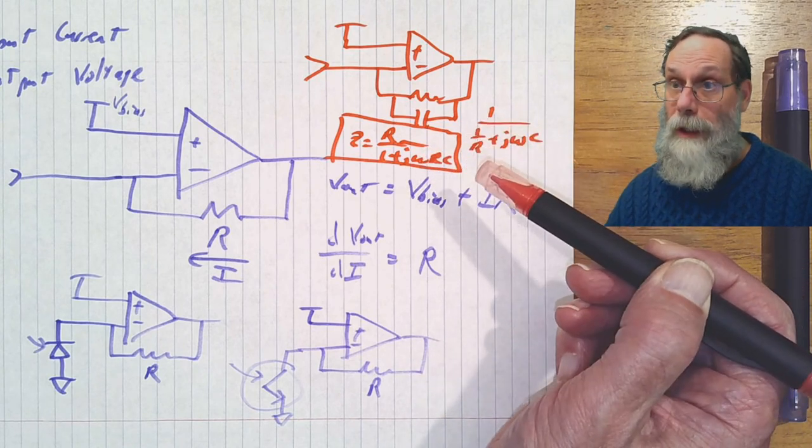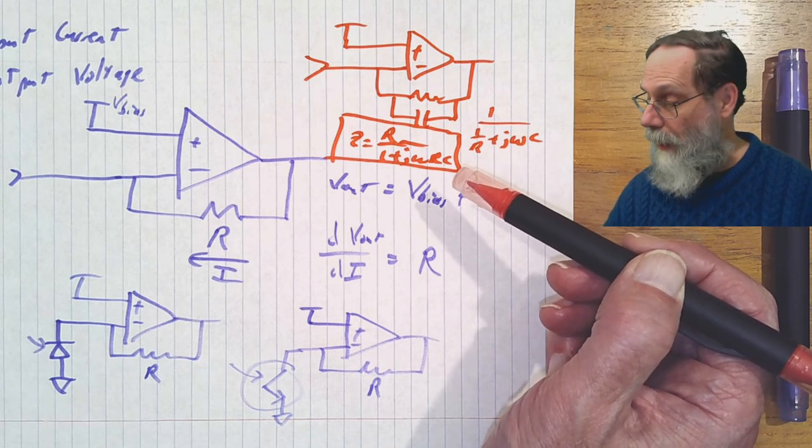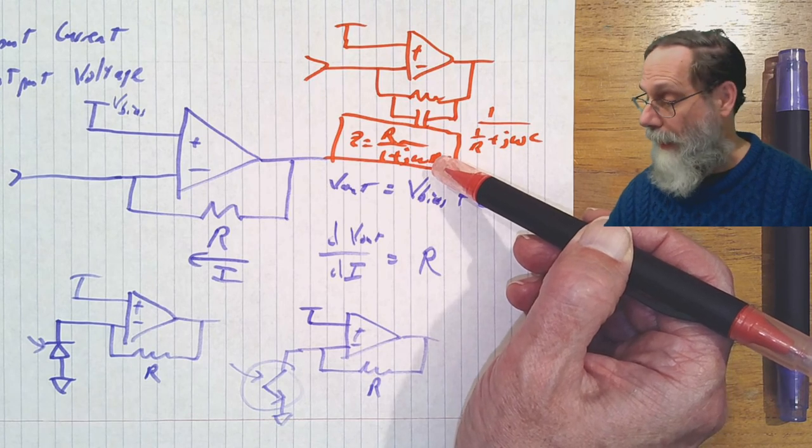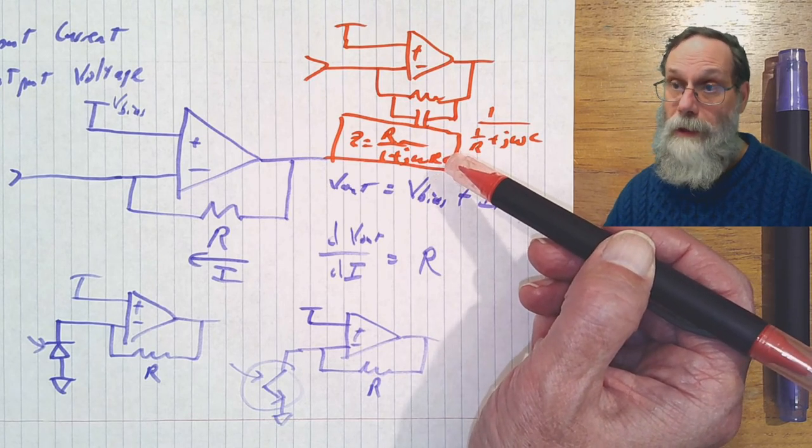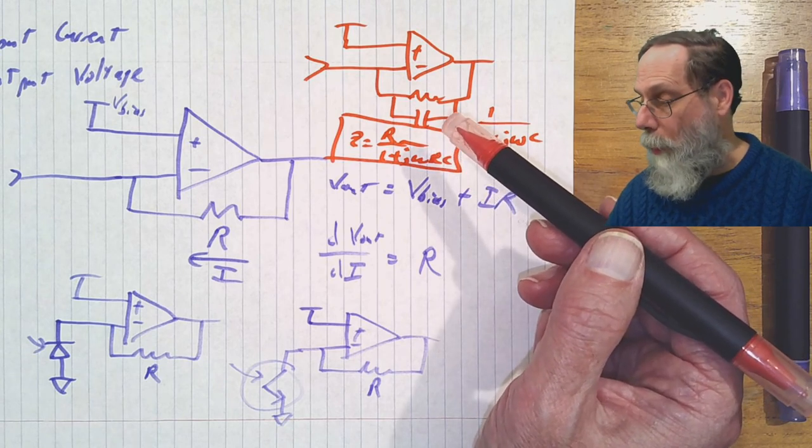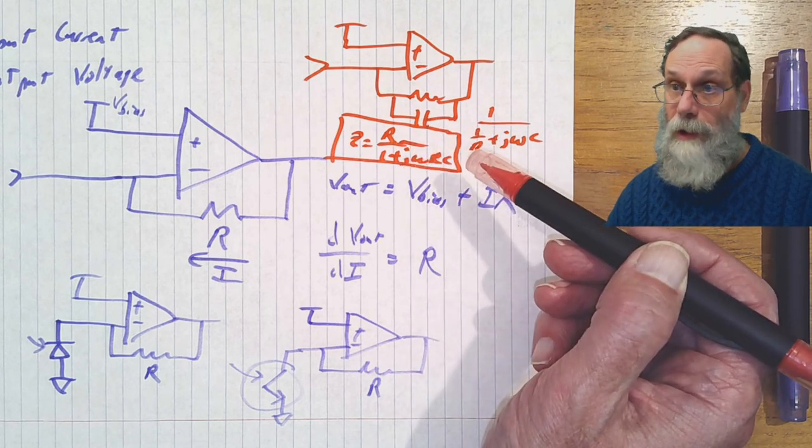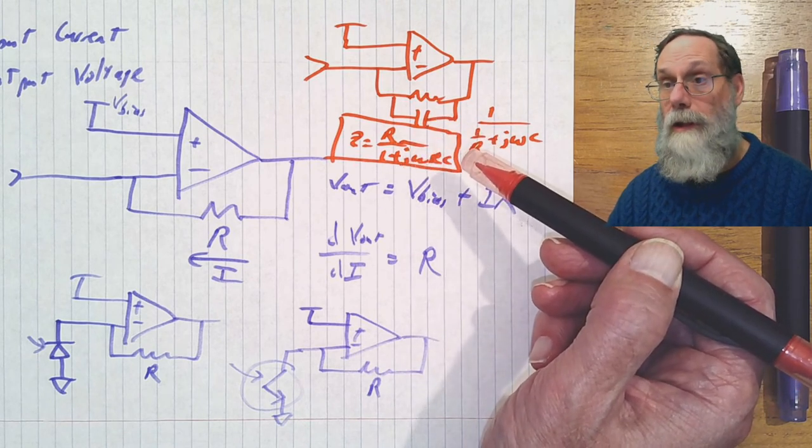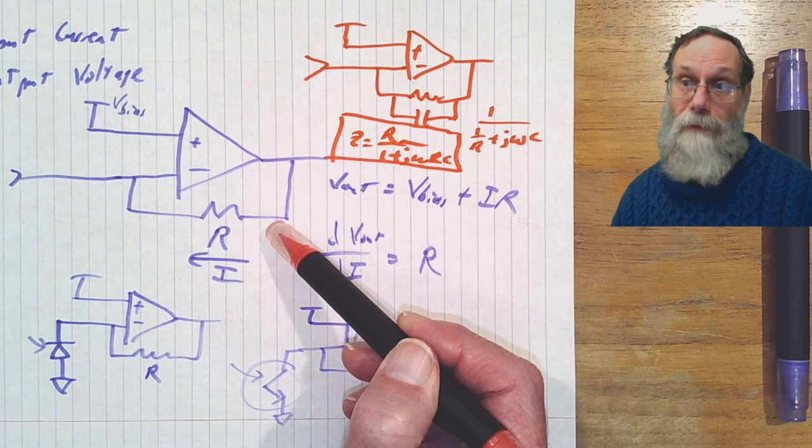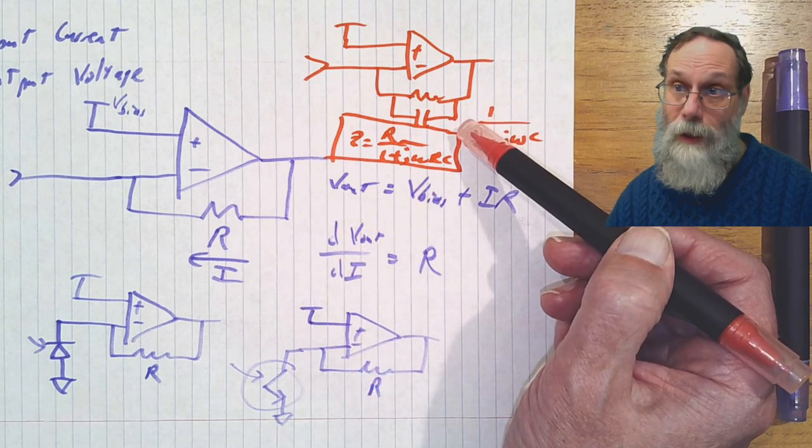At very low frequencies, when omega is close to zero, much less than rc, this is just going to have a gain of r. So that's the DC gain. And as omega goes to infinity, when it's much larger than rc, this is going to have a gain of 1 over j omega c. So it's going to behave just like a capacitor. That's essentially a low-pass filter. So you can do a transimpedance amplifier with a fixed gain r, or one with a low-pass filter gain.